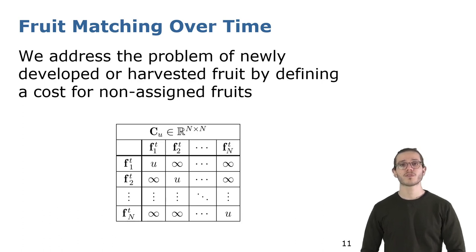To remember, one of the challenges of this approach are newly developed or harvested fruits that do not have any association. For this reason, we develop a non-assignment strategy, allowing certain fruits to not be assigned to corresponding set of strawberries. We therefore created a metric CU in which we placed a constant value on its diagonal.